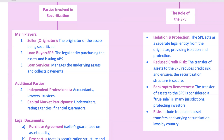By transferring assets to the SPE, the originator not only reduces its own credit risk, but also often improves the credit rating of the ABS, as investors now rely solely on the SPE's asset pool. This setup is reinforced by the idea of a true sale in many jurisdictions, where ownership is fully transferred to the SPE, protecting investors' claims even in the event of a default. However, securitization laws differ across countries, and risks like fraudulent transfer claims can arise, so it's essential for investors to be aware of the specific legal environment surrounding ABS.